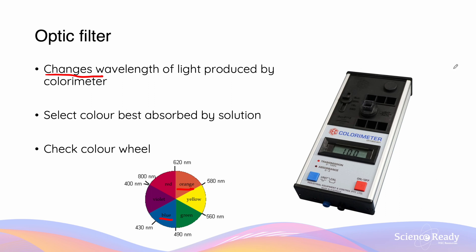Looking at this picture of our colorimeter, we see faintly on the left-hand side four different color options which can be chosen for the optic filter. The top is blue, then green, yellow, and red.